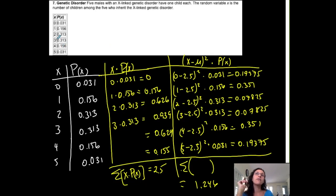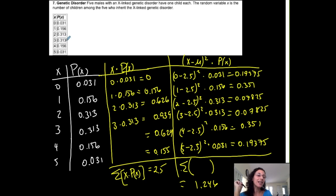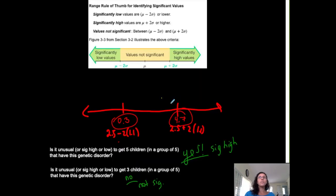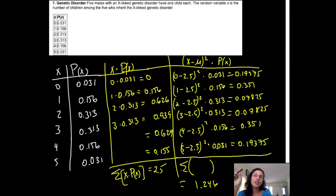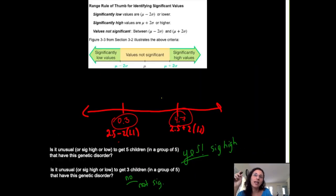Looking at the probability of getting three children: there's a 31.3% chance that in a group of five, three of them have this genetic disorder. That's likely to happen, so it's a typical situation. You can analyze a probability distribution using the probabilities, or using the range rule of thumb — or both, and they should match up.